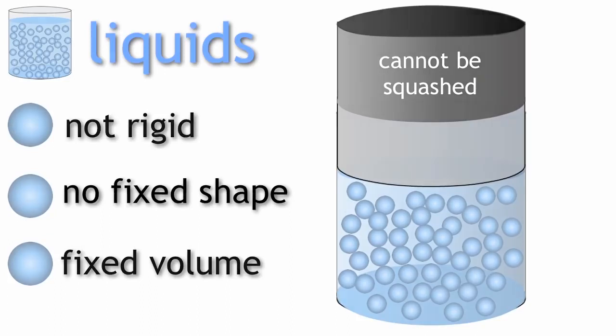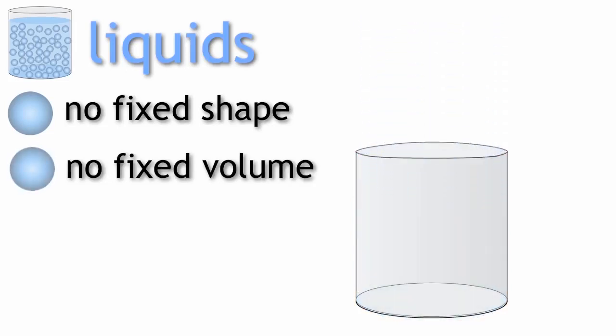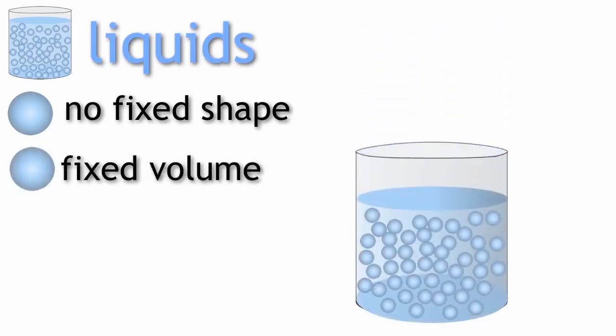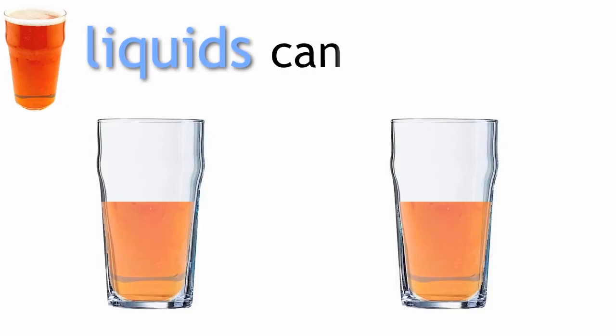Beware with that one, as many students think because liquids do not have a fixed shape, they do not have a fixed volume either. But they are wrong. If someone orders a pint of beer, they cannot make it two pints by pouring it into different containers. As you know, liquids can flow.